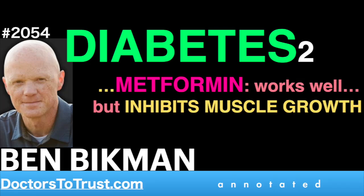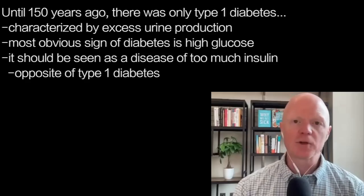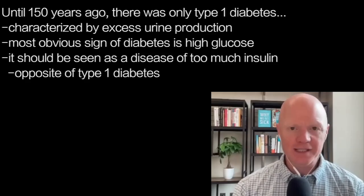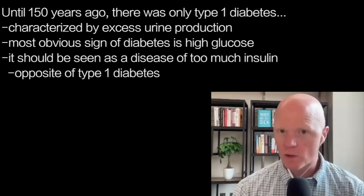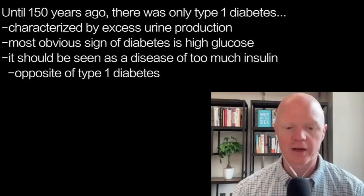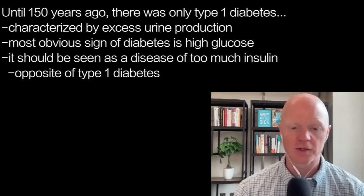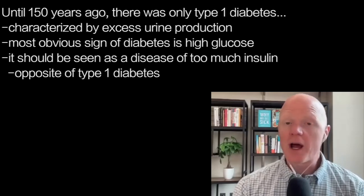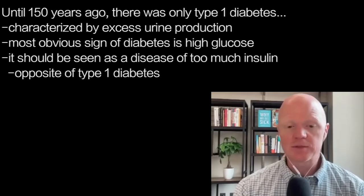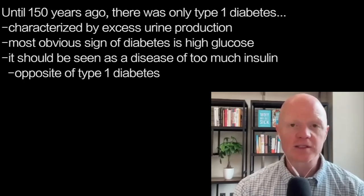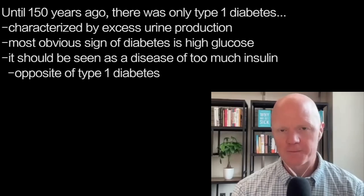The problem, to bring this back to the topic, is that we have lumped these diseases together because the most obvious manifestation of type 1 diabetes — which historically was the only one that really ever existed prior until about 100 to 150 years ago — the most obvious sign and symptom was a consequence of the high glucose, namely the excess urine production: polyuria.